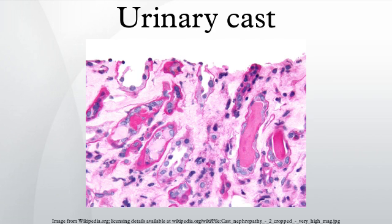Urinary casts are cylindrical structures produced by the kidney and present in the urine in certain disease states. They form in the distal convoluted tubule and collecting ducts of nephrons, then dislodge and pass into the urine where they can be detected by microscopy. They form via precipitation of Tamm-Horsfall mucoprotein, which is secreted by renal tubule cells, and sometimes also by albumin in conditions of proteinuria. Cast formation is pronounced in environments favoring protein denaturation and precipitation, and Tamm-Horsfall protein is particularly susceptible to precipitation in these conditions.